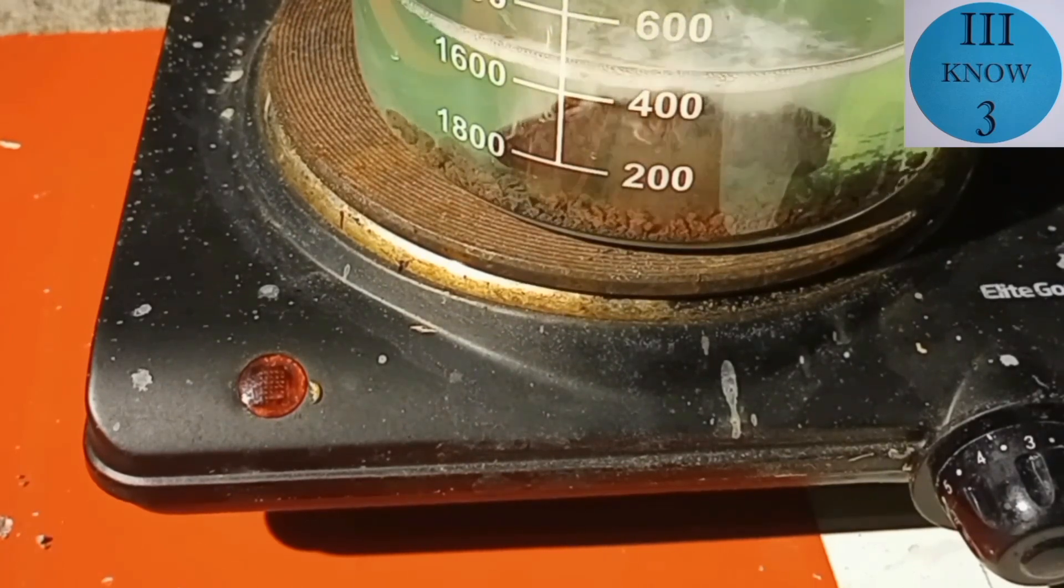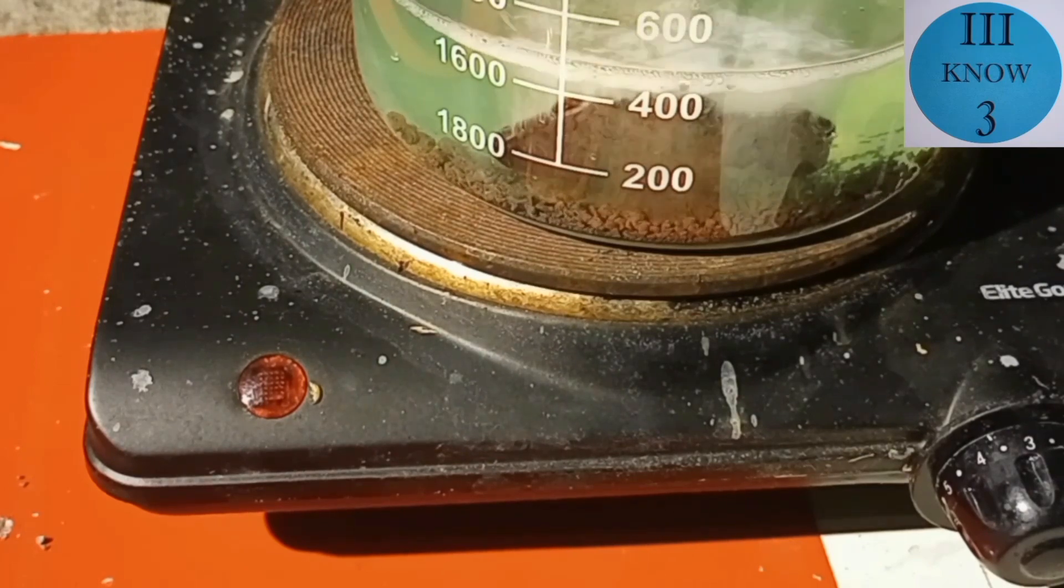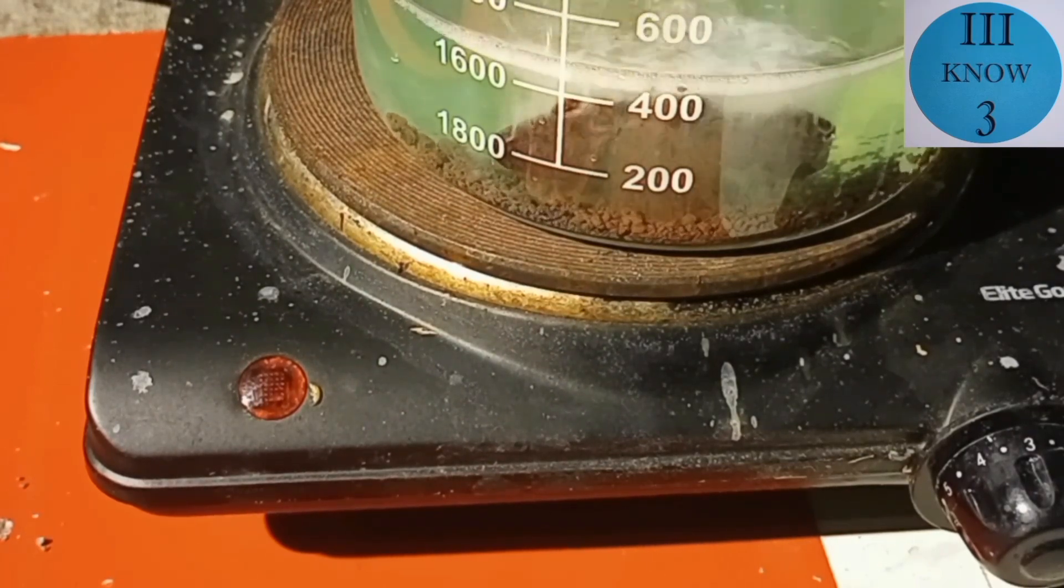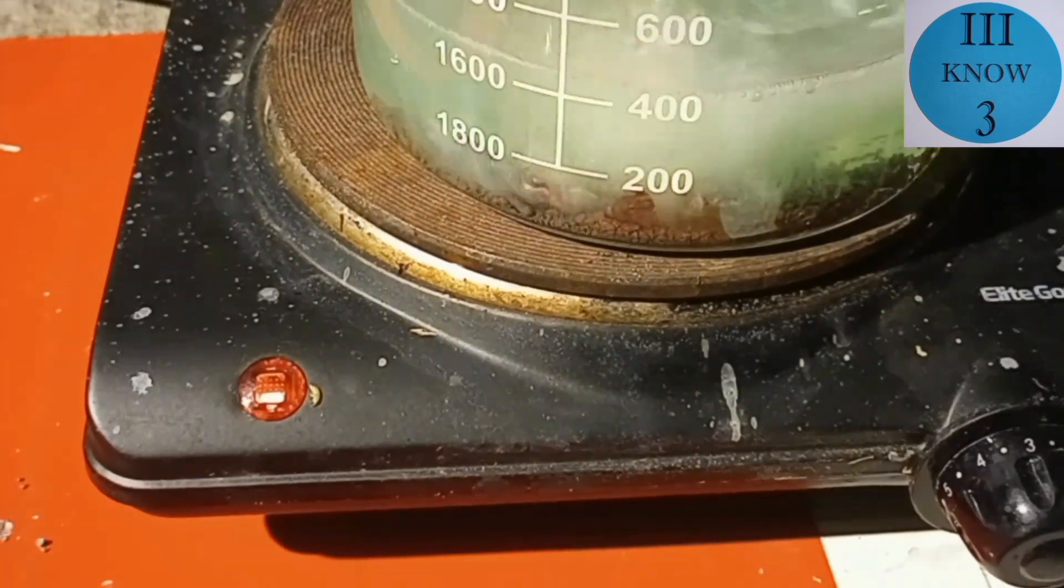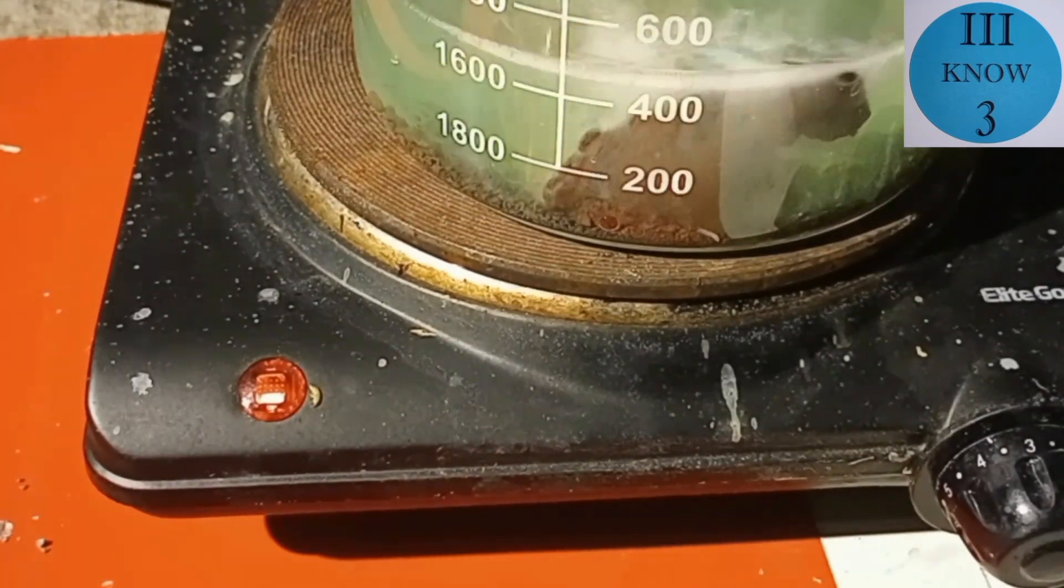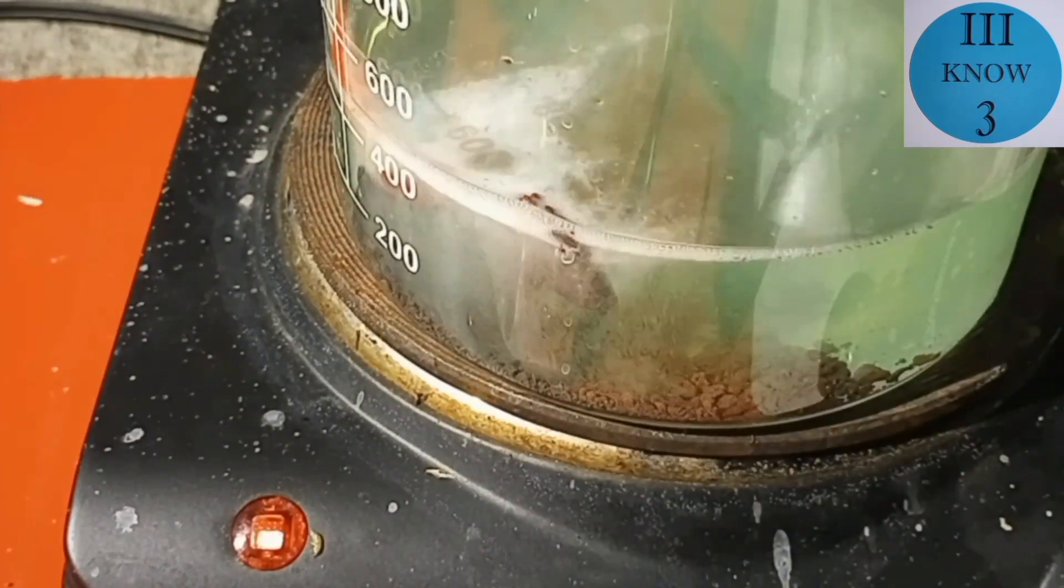Nickel and copper do not dissolve well in acetic acid on their own. For the copper I added hydrogen peroxide to get it to dissolve and for the nickel I used electrochemistry to make the nickel acetate.